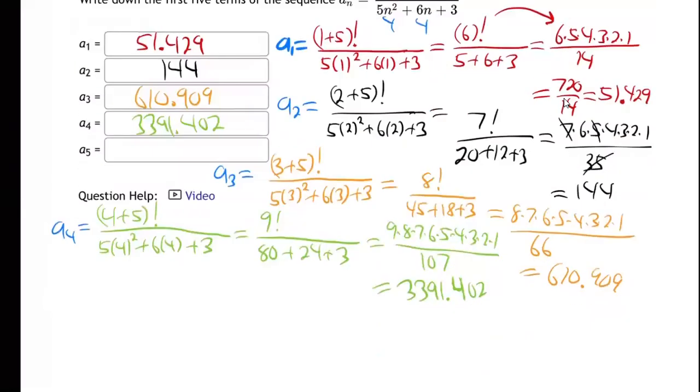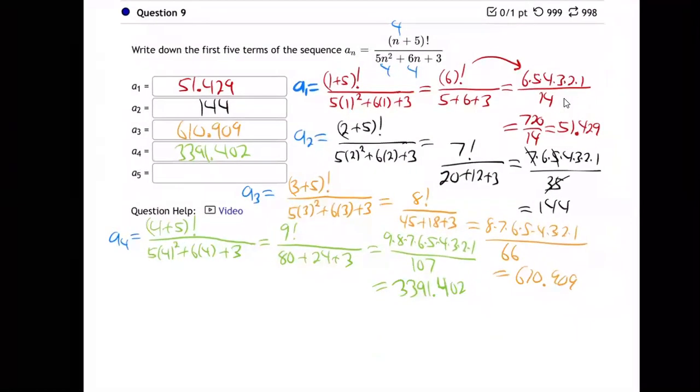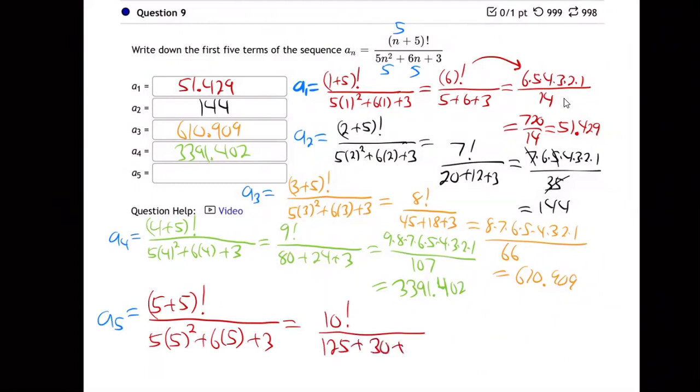And finally - whoo, this has been tedious - finally a sub 5. So now we plug in 5. All right, so we get - last one here - we get 5 plus 5 factorial all over 5 times 5 squared, 6 times 5 plus 3. And so that's 10 factorial over 5 times 25 is 125, plus 30, plus 3...